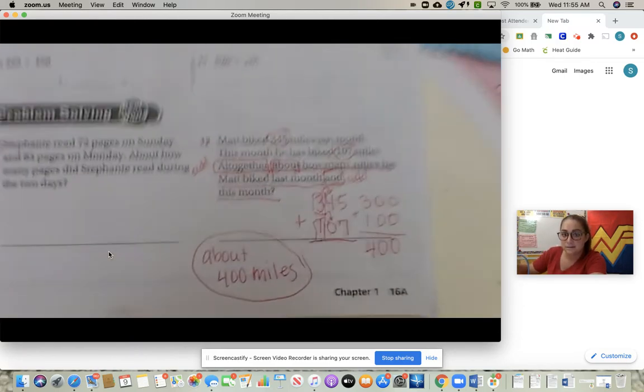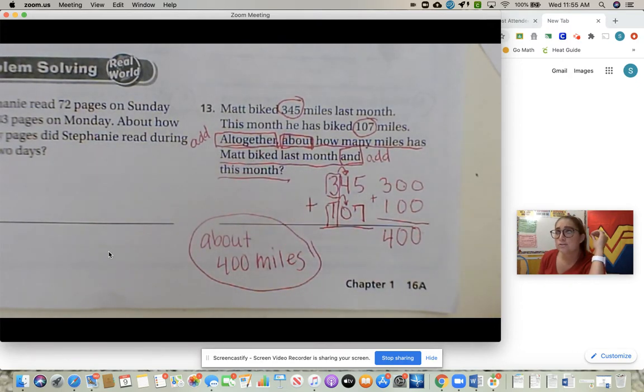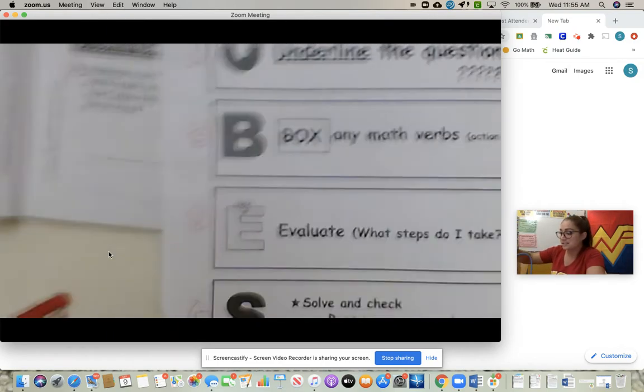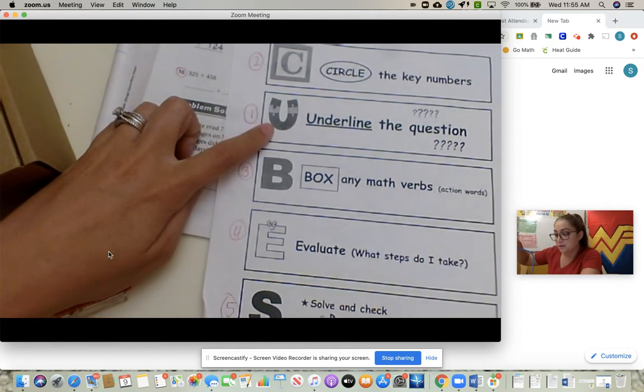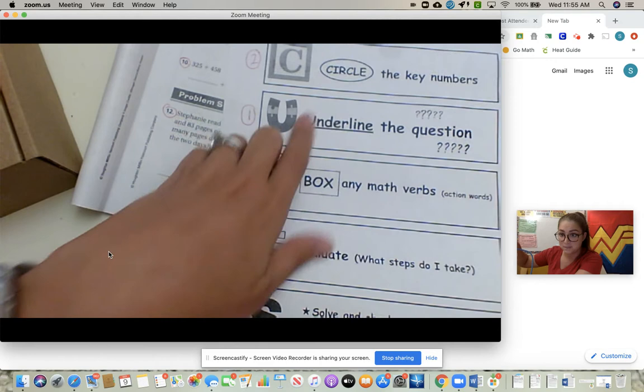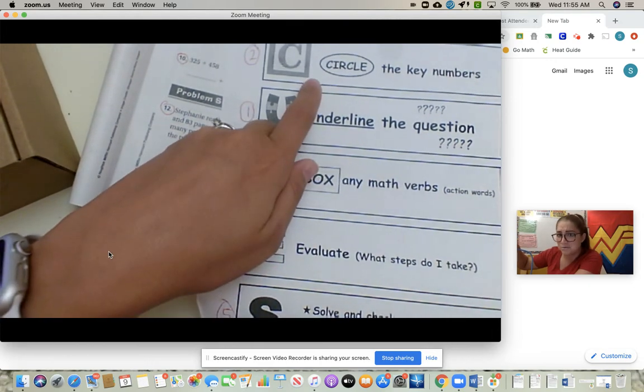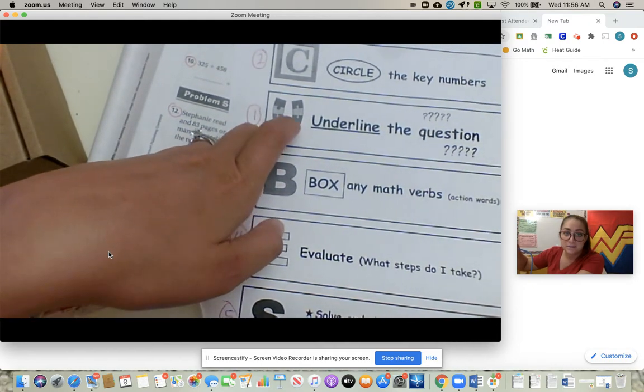So down here I did go over number three. We use CUBES. So important with math word problems. Because I used to struggle, but not anymore because now I figured out a way that helped me using CUBES. This worksheet stays in your folder always. I figured out that underlining the question first off is always better than the key numbers. Because you need to know what the question is asking you before you know what numbers you're going to be adding or subtracting. So number one is always underline the question.